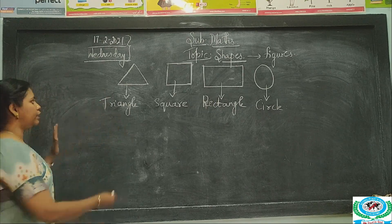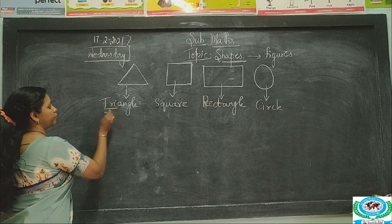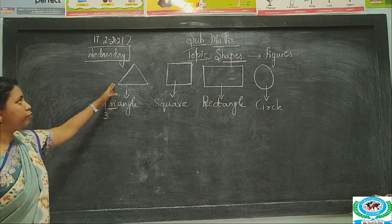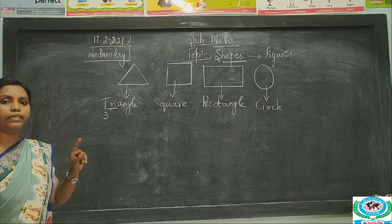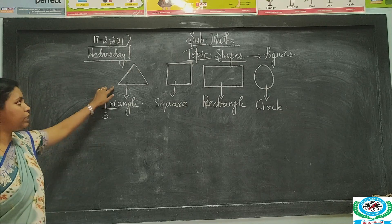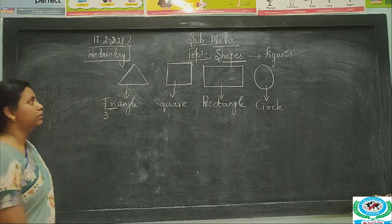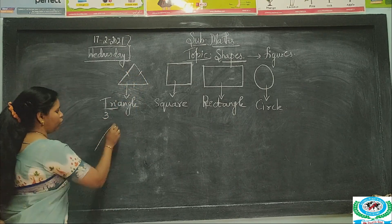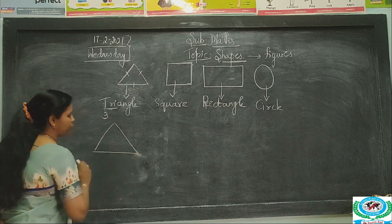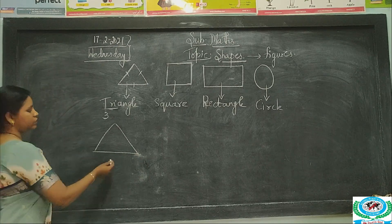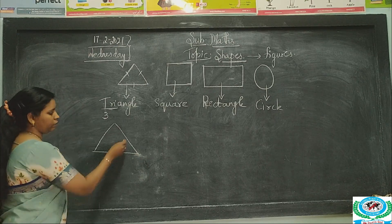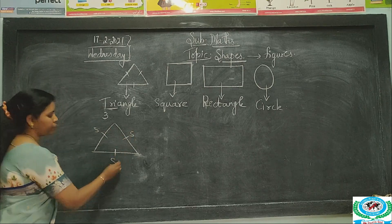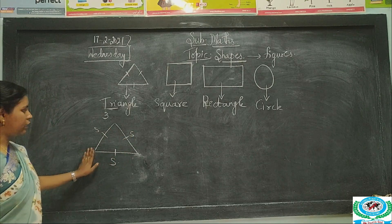Tri means three. The figure which has three sides is a triangle. You can count the sides: one, two, three. These are called sides.